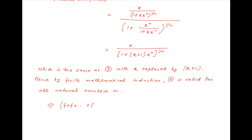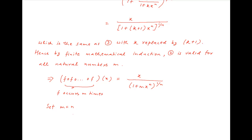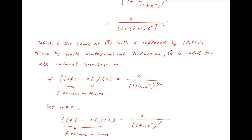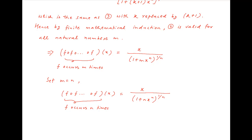In other words, function of a function and so on m times of x is equal to x upon 1 plus m times x raised to the power n, whole raised to the power 1 upon n. This is valid when m is equal to n as well. Therefore, f composed n times of x is equal to x upon 1 plus n times x raised to the power n, whole raised to the power 1 upon n. Notice that the left-hand side is equal to g(x).